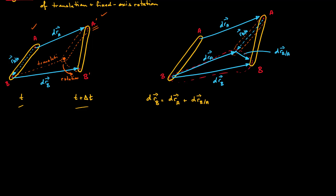The velocity of point B is just the time rate of change of the displacement vector. Therefore, it will be V_A plus V_B with respect to A. We see explicitly that V_A is the translation component. For pure translation, V_B equals V_A, but here we have an additional component — V of B with respect to A — which is the rotation about point A.